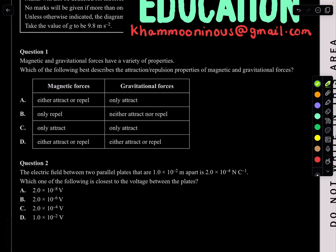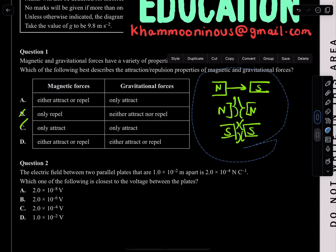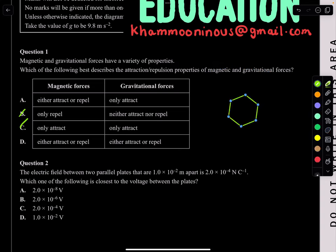Question 1. Magnetic and gravitational forces have a variety of properties. Which of the following best describes the attraction-repulsion properties of magnetic and gravitational forces? Magnets have both attractive and repulsion properties — north-south poles attract, north-north and south-south repel. So magnetic force options B and C are wrong because they say only repellent or only attract. Gravitational forces only have attractive forces — it only attracts. So A is the best answer.